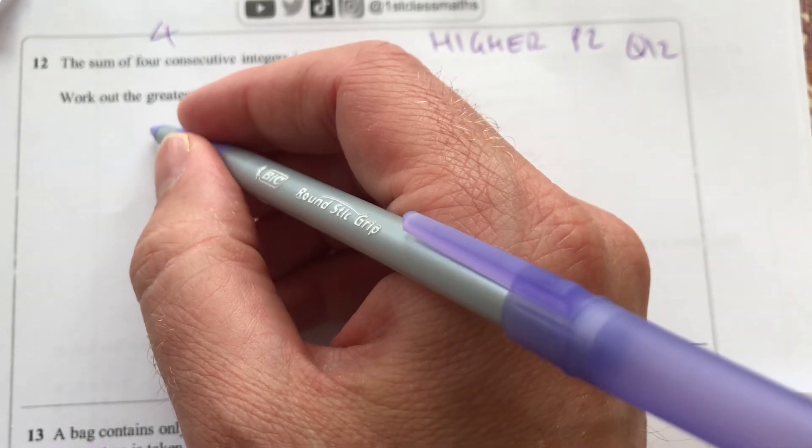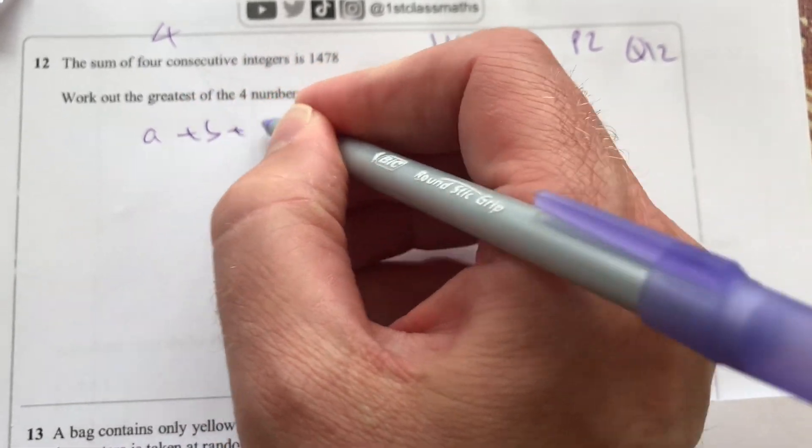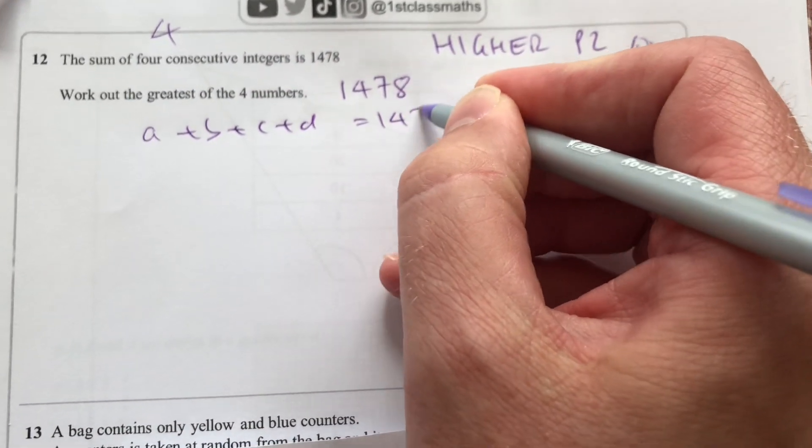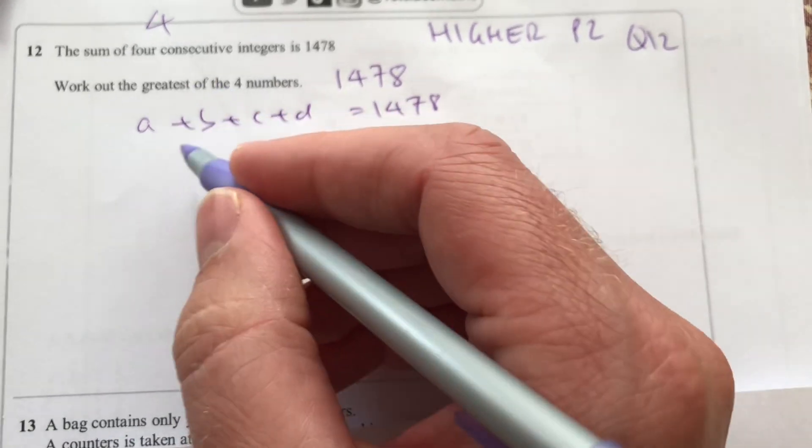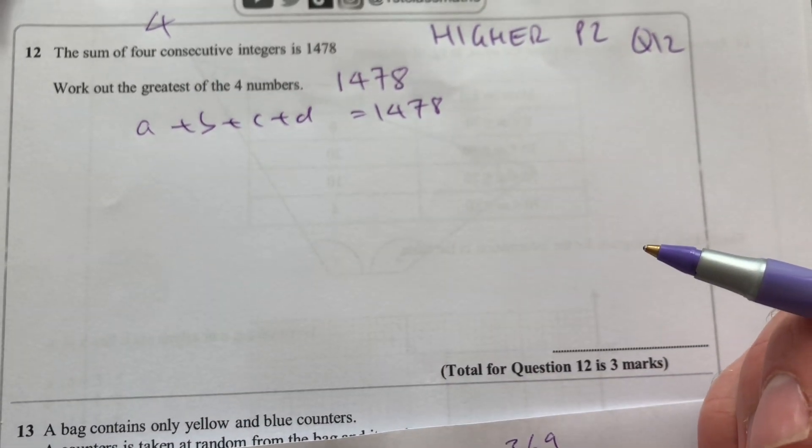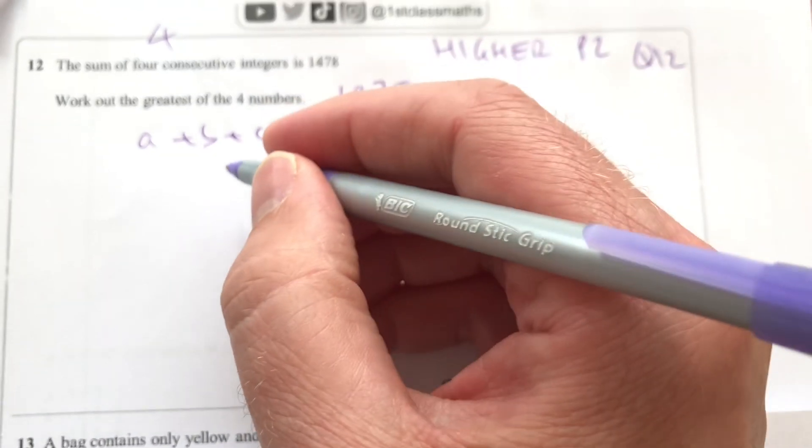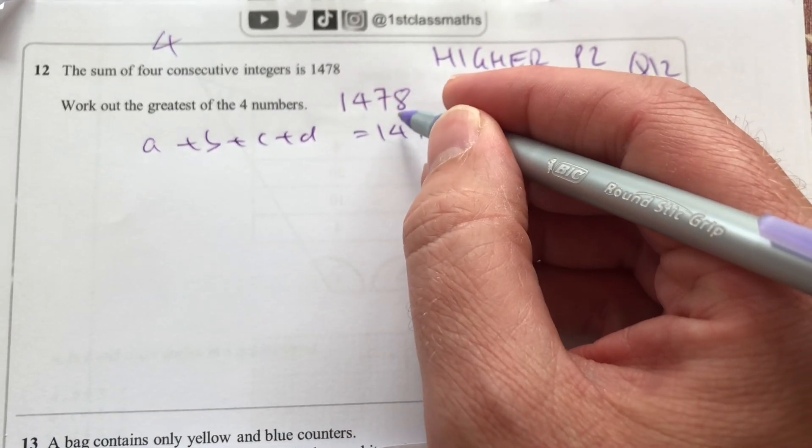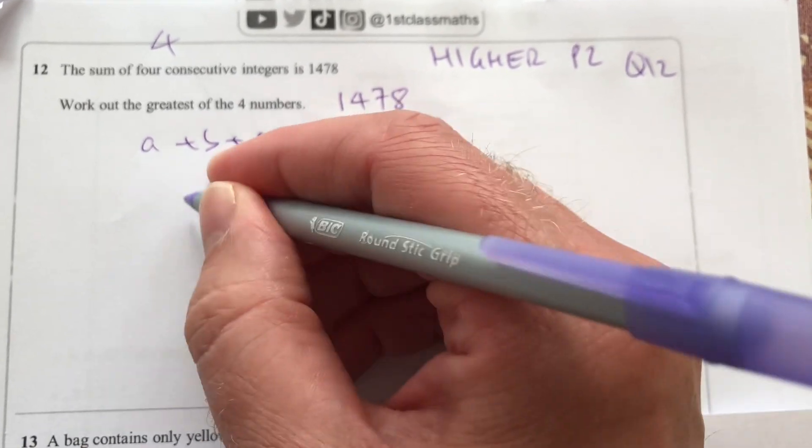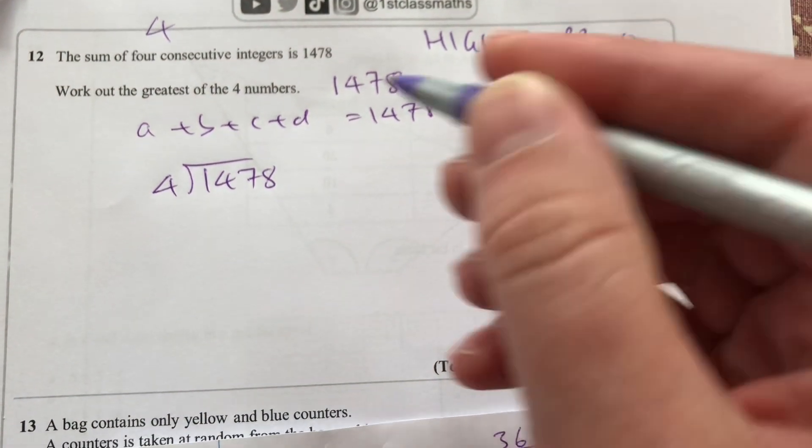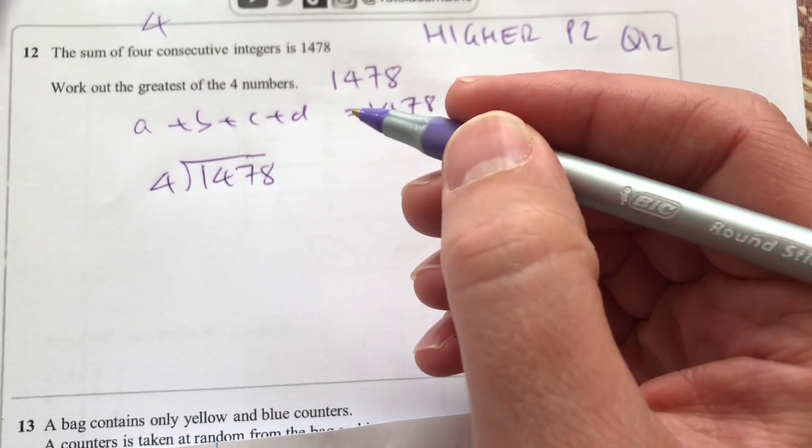So four numbers, A plus B plus C plus D, sum to 1,478, and each of those is one bigger than the next. I think the best way to do that is to think that if I divide 1,478 by 4, I'll find roughly around where we need to look.